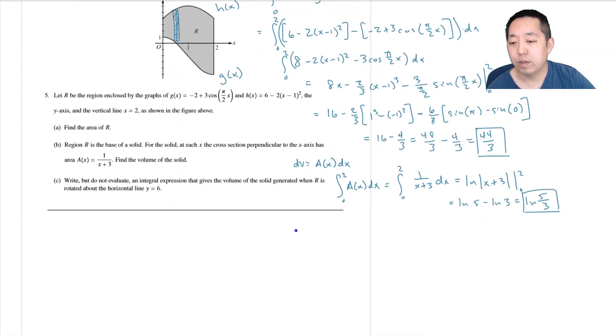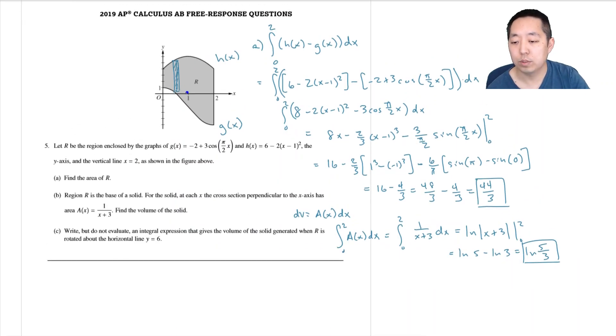Then write, but do not evaluate, an integral expression that gives you the volume of the solid generated when R is rotated around the horizontal line y equals 6.